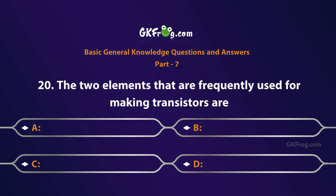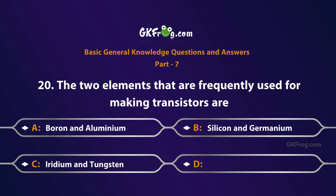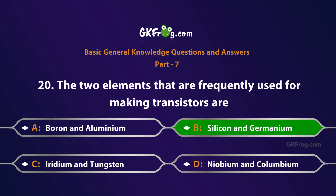The two elements that are frequently used for making transistors are: A. Boron and Aluminium, B. Silicon and Germanium, C. Iridium and Tungsten, D. Niobium and Columbium. Correct answer is B. Silicon and Germanium.